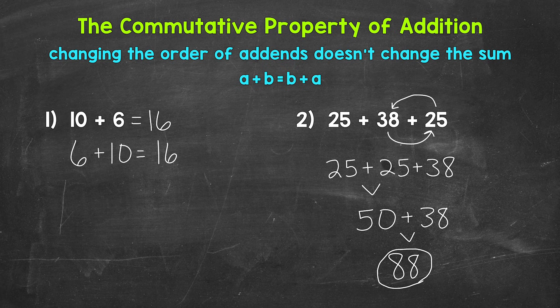The commutative property allowed us to change the order of that problem and made it simpler to work through. We had 25 plus 25, which gave us 50, and then we added 50 and 38 to get our final answer of 88.